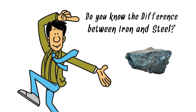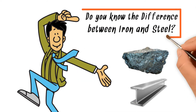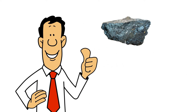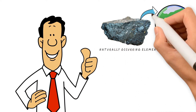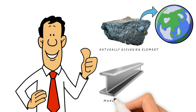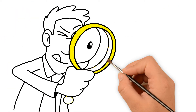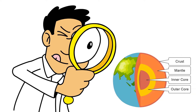Do you know the difference between iron and steel? Learning the difference between iron and steel is simple, because iron is a naturally occurring element found in rocks under the earth's surface, and steel is manufactured by mixing iron with other elements. You can literally find iron all over the planet — earth's crust is also made of iron, and it is abundantly available.